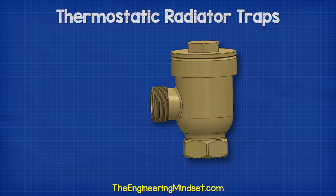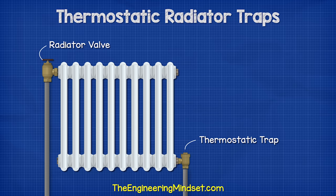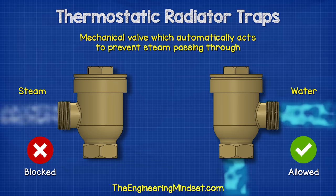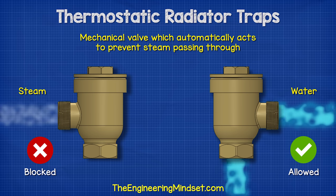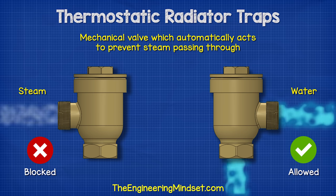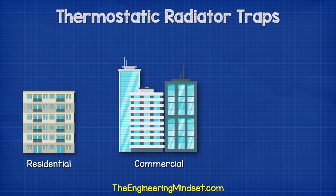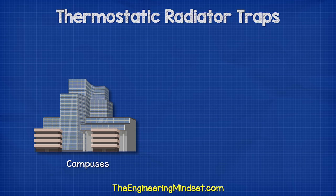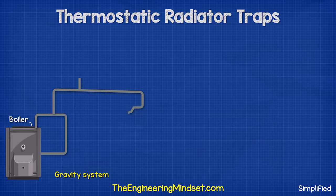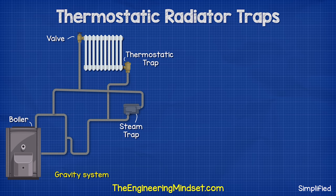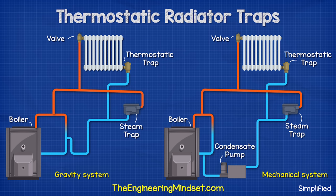The thermostatic radiator trap looks something like this, although there are many variations. These valves are connected to the low side of a steam operated radiator. This is a mechanical valve which allows air and water to pass through but automatically acts to prevent steam passing through. Steam heating systems can be found in residential, commercial, and even industrial sites. They're very common in large campuses, especially larger older buildings. These systems do not require pumps — instead they use the steam itself to distribute heat around the building, although we might find a condensate pump on the return line.